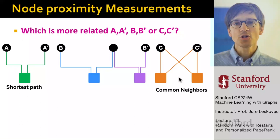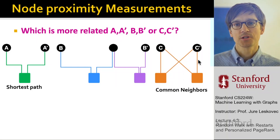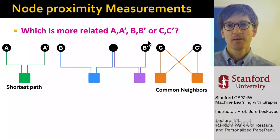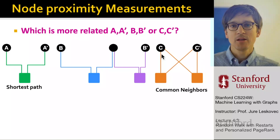However, the issue is that if I have another example where C and C prime have two users that both purchased these two items, then C and C prime intuitively are at closer proximity than A and A prime. So how would I develop a metric that captures both shortest path and how many different neighbors you have in common and how many different paths allow you to go from one node to another?